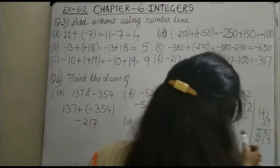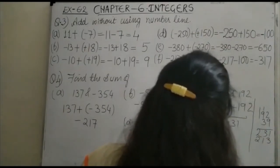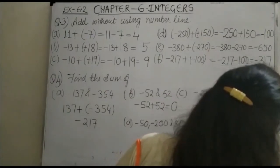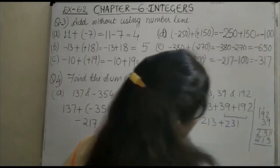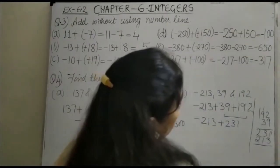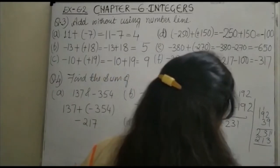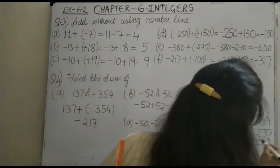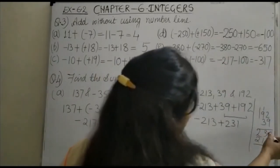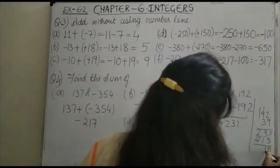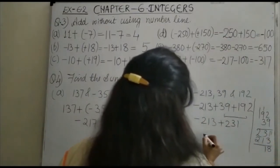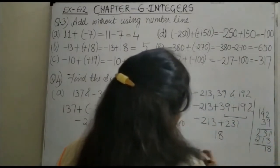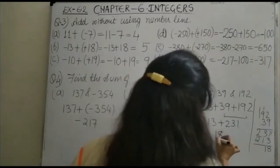Working through the subtraction: 11 - 3 is 8, and 2 - 1 is 1, so you get 18. The sign of 18 will be positive, since the bigger number 231 is positive.